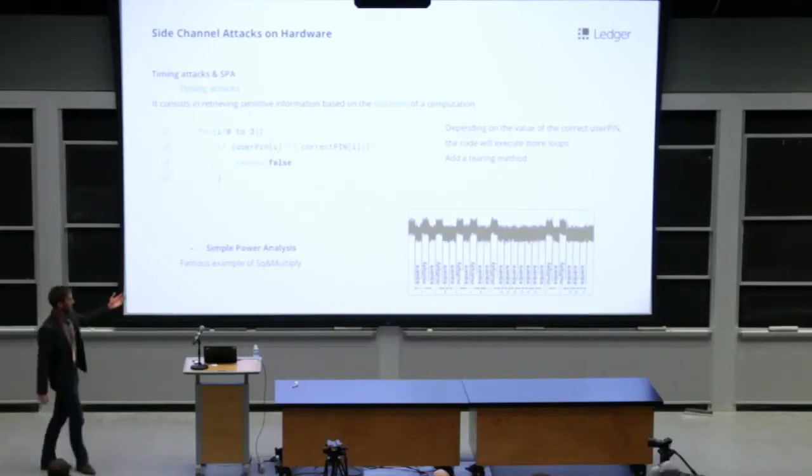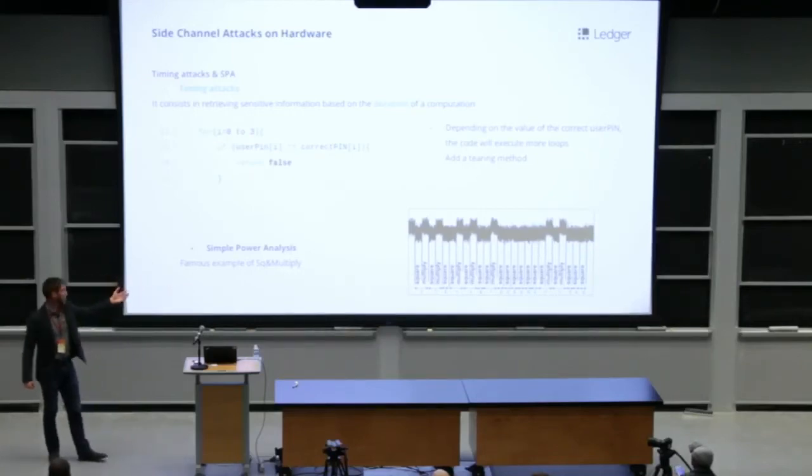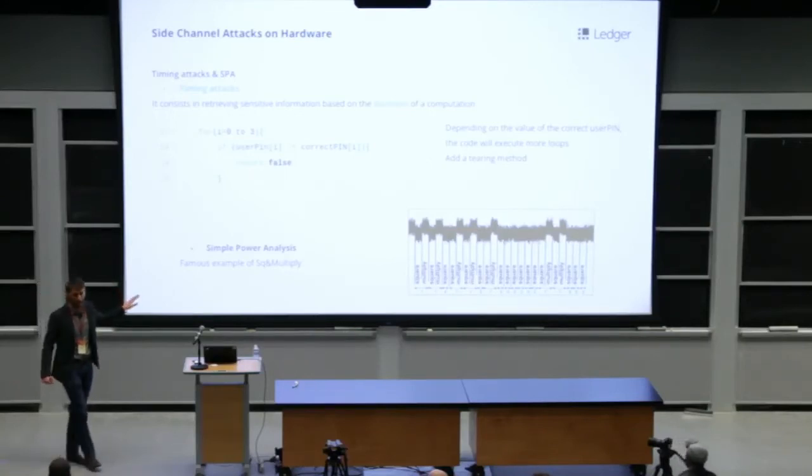That means the execution depends on the value of the key. And if it's possible to distinguish on the power trace a square from a multiply, that means the attacker only has to read the value of the bits of the key directly on the power consumption. I talk about square and multiply for RSA, but in the case of ECDSA, this is double and add, and the algorithm is exactly the same.